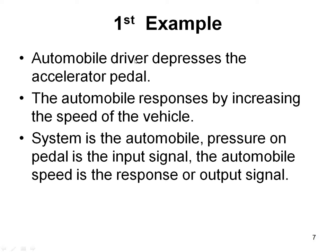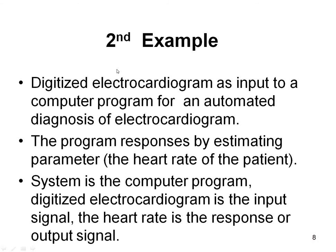For example, an automobile driver driving the car will press the accelerator. Here the system is the automobile, and the pressure given on the pedal is the input signal. Based on the pressure given, the speed of the automobile will vary — that is the output signal. The second example is the digitalized ECG signal given as input to a computer program. This computer program calculates the heart rate of the patient. Hence the system is the computer program, the ECG signal is the input, and the calculation of the heart rate is the output signal.